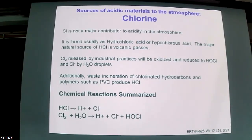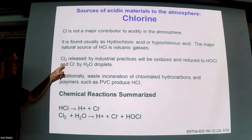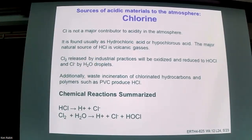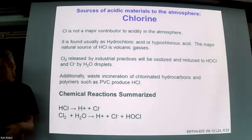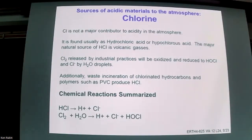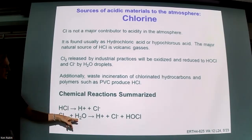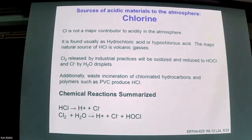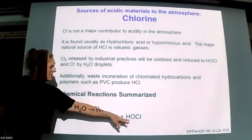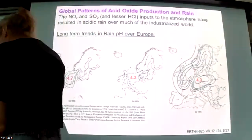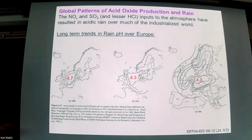The other kind of acid oxide in the atmosphere is chlorine, which is much less common. In very localized places — like parts of the south around the Mississippi River through Louisiana — industrial processes emit hydrochloric acid or chlorine into the atmosphere, which can oxidize to make HCl or HOCl. But this is really just a footnote.